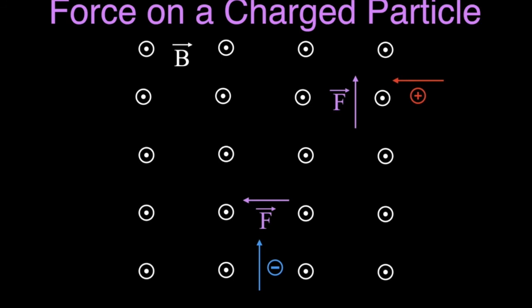So there you go. We covered how to determine the direction of the force on a charged particle — whether you're using the right-hand rule for a positively charged particle or the left-hand rule for a negatively charged particle. We also talked about how there's no force when there's no motion of the particle or when the particle is moving parallel to the magnetic field lines. Thank you very much for watching. If you found the video helpful, please subscribe to my channel for physics, chemistry, and math videos, give me a thumbs up, leave a positive comment, and share this video with your friends.